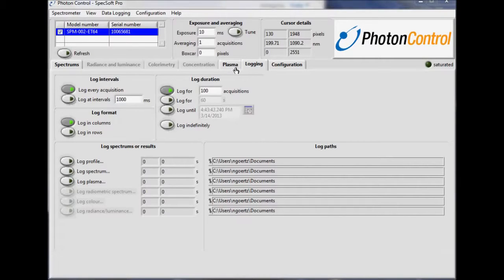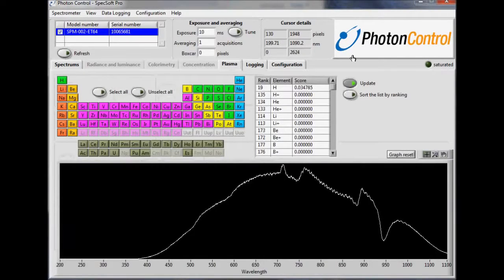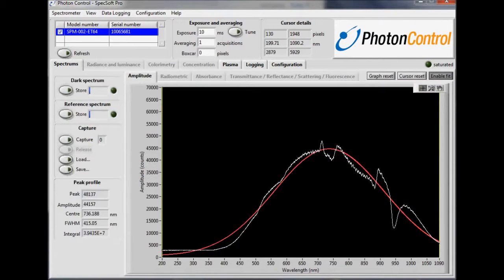Now over to the plasma tab, where you'll see we've added an entire new feature set. Alright, on to our simple transmission measurement. First things first, let's disable the fit.